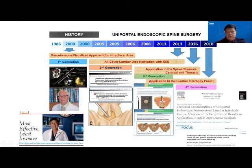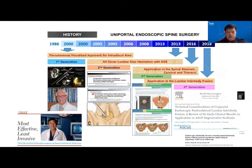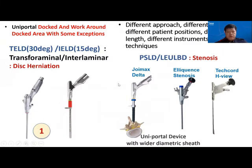Spinal stenosis became a thoracolumbar application in the late 2010s, and now we have applied interbody fusion as a fourth generation endoscopy. The challenge in uniportal endoscopy is that we have different degrees, different lengths, as well as different approaches, as we need to dock and work around the dock area. Each has its specific instruments and a steep learning curve, with instruments that cannot be used for other types of spine surgery.